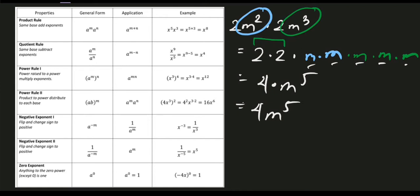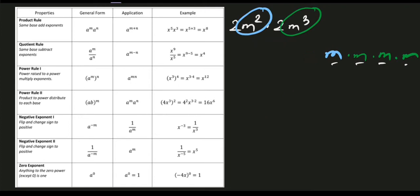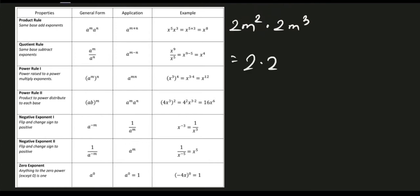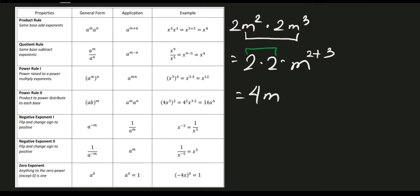That is our first concept. Using the product rule directly: multiply the numerical coefficients — 2 times 2 equals 4 — and for the variable m, add the exponents: 2 plus 3 equals 5. So the answer is confirmed as 4m raised to 5. That is our product rule.